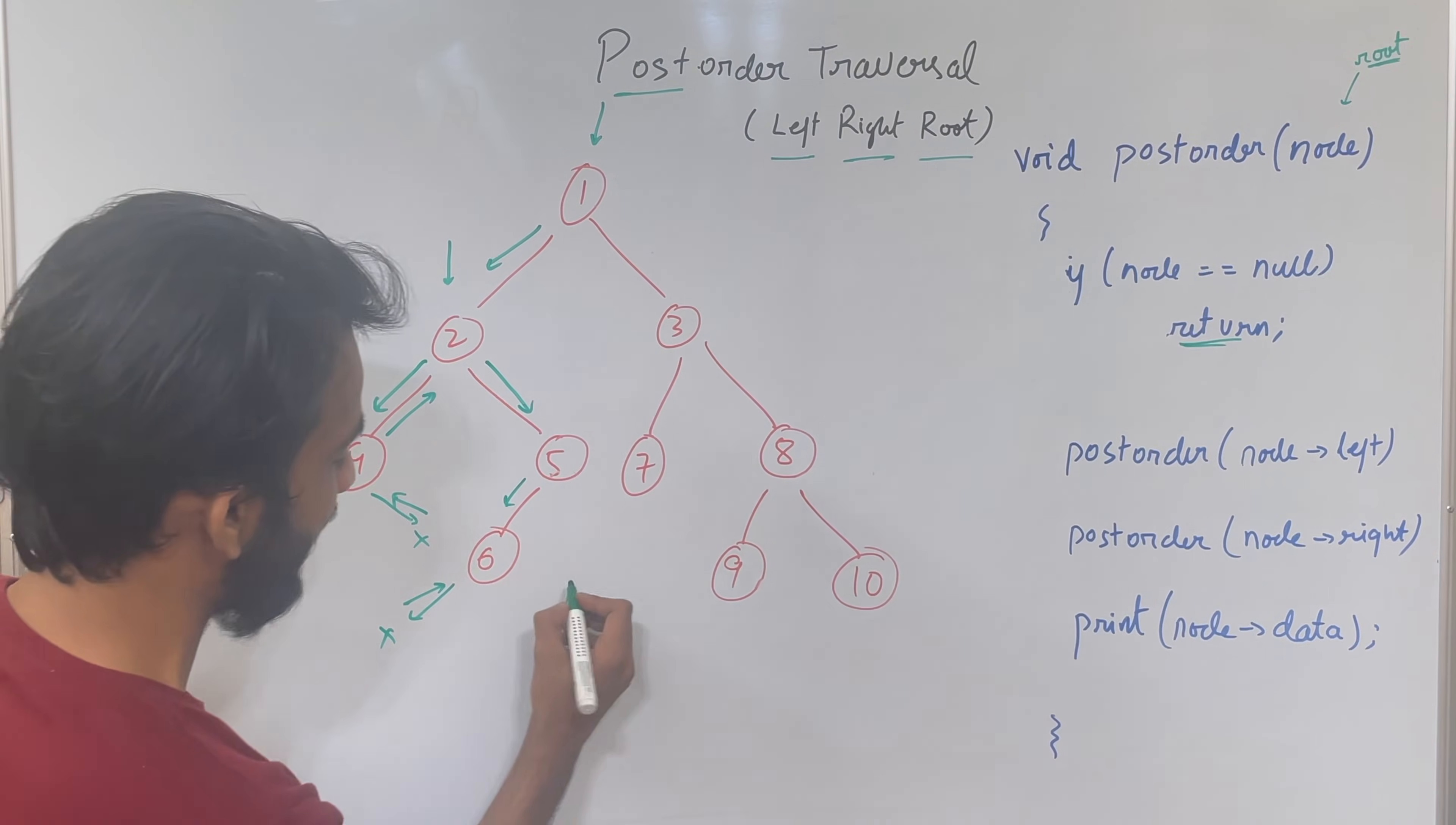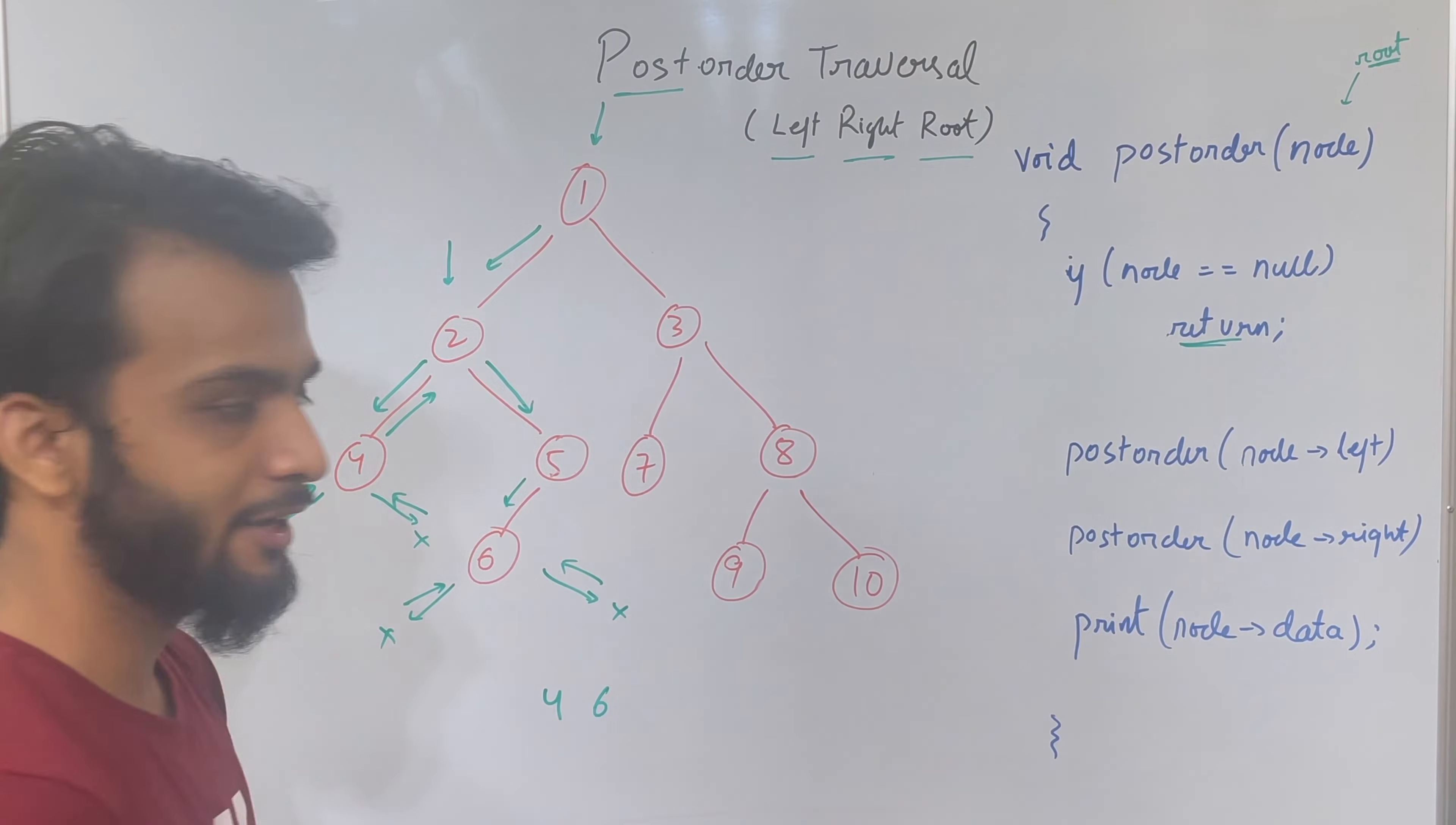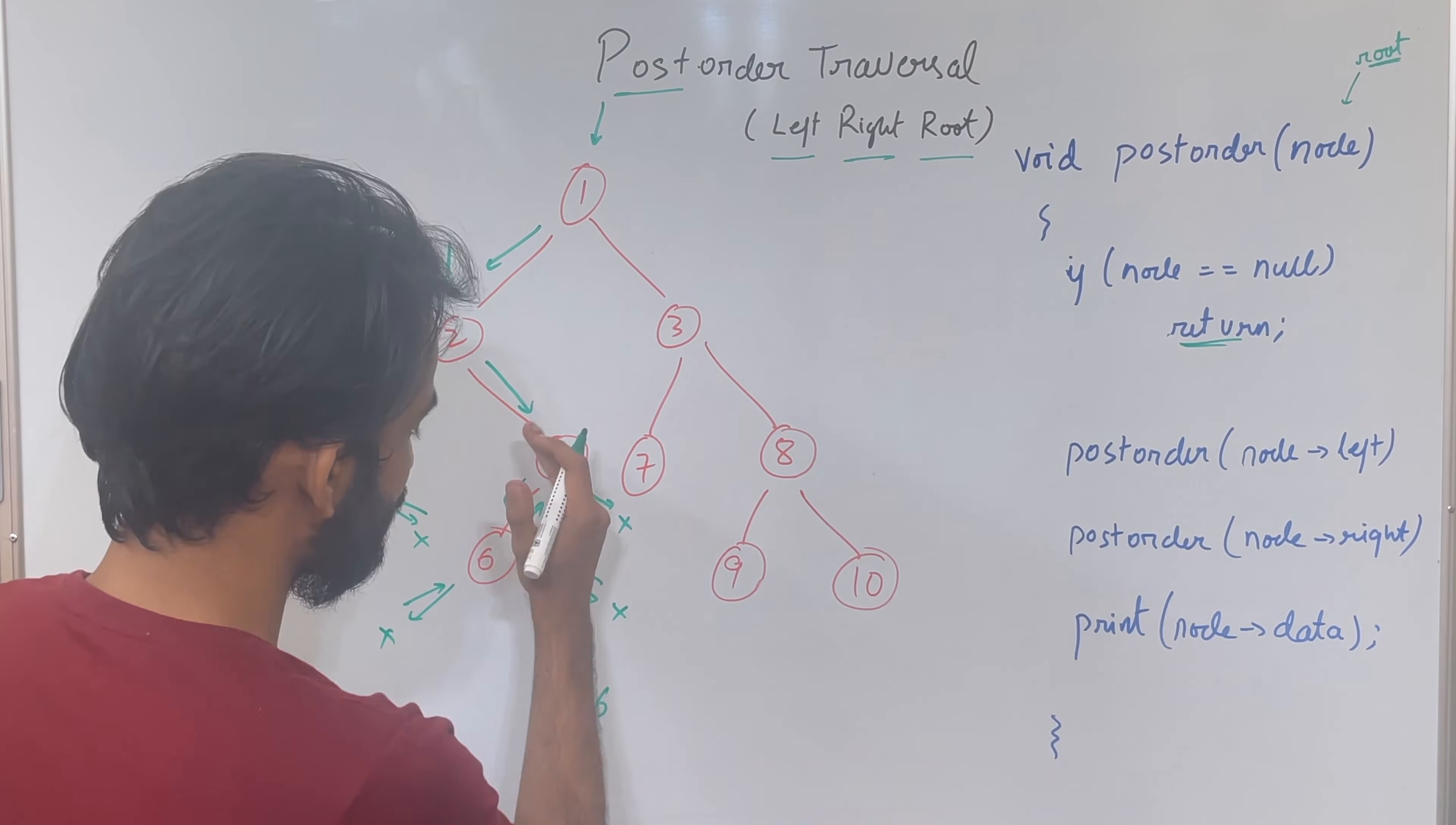So I will go to the right and again I'll see a null, so I will make sure I come back. As I come back, I have gone to the left, I've gone to the right, and I'm the guy left so I'll print myself. Now 6 says I'll go back. 5 says I went to the left, now I'll go to the right and it's a null. Since it's a null I'll return. So 5 as of now has gone to the left, has gone to the right.